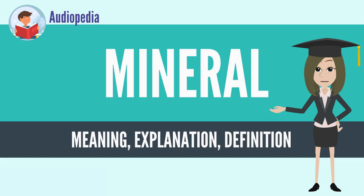The silicate minerals compose over 90% of the Earth's crust. The silicate class of minerals is subdivided into six subclasses by the degree of polymerization in the chemical structure. All silicate minerals have a base unit of a silicate tetrahedron — that is, a silicon cation coordinated by four oxygen anions, which gives the shape of a tetrahedron.